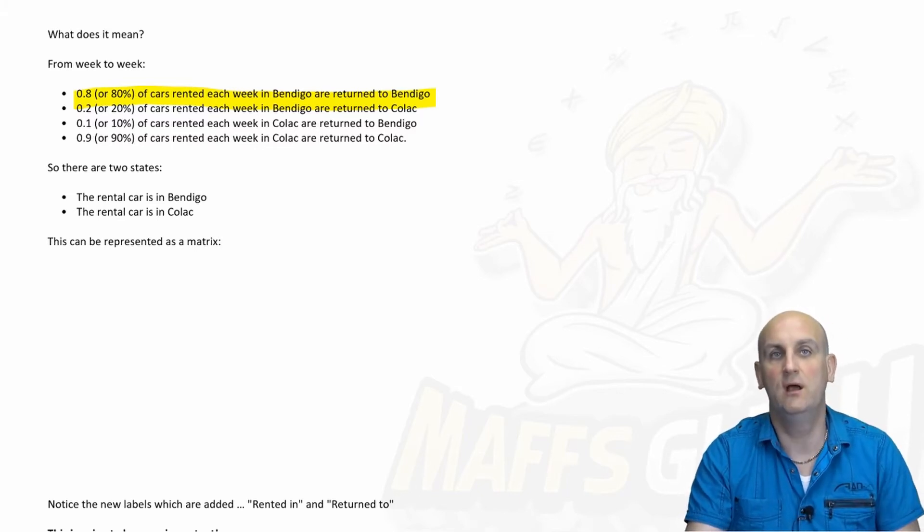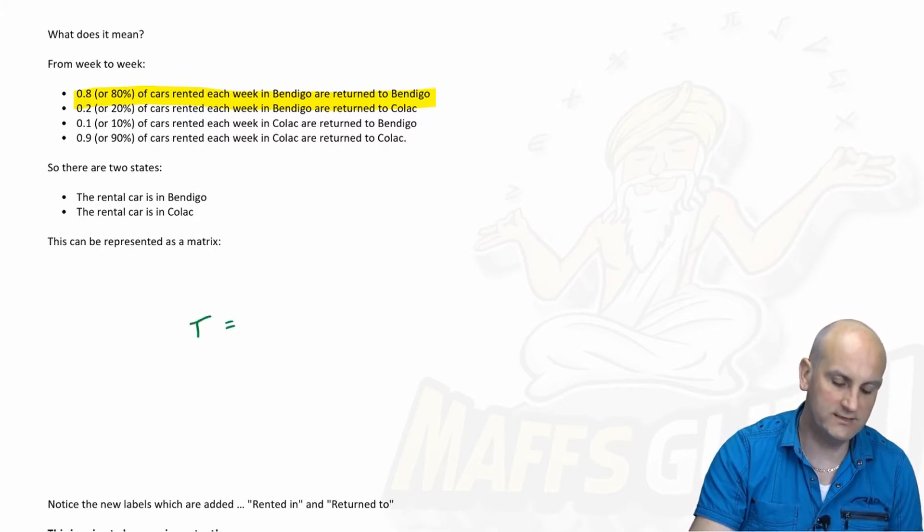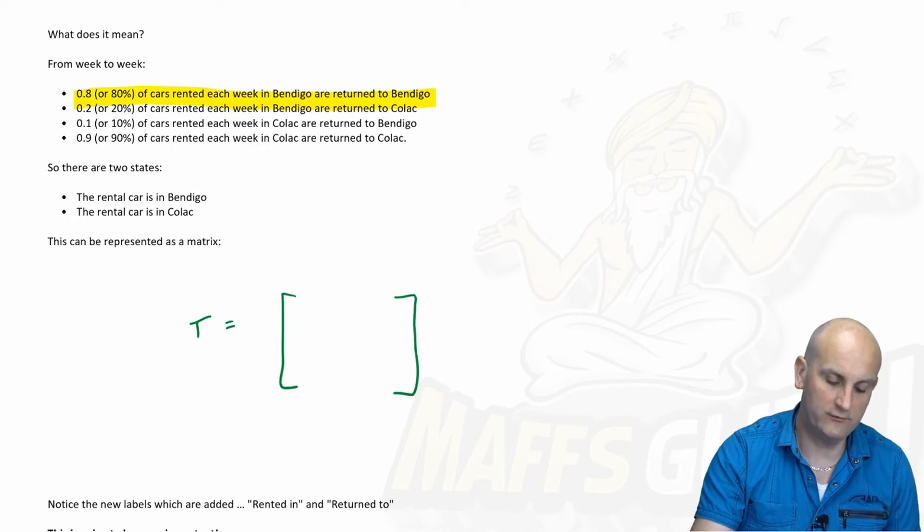Now remember, our two states are a car's in Bendigo, a car is in Colac. So here's my transition matrix. I'm going to draw a two by two. It looks fairly big, but my car is either in Bendigo or Colac. Bendigo or Colac.